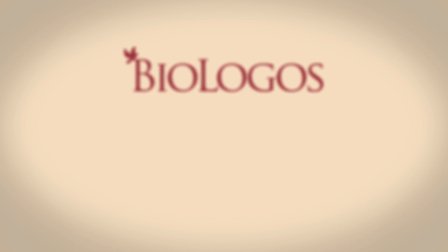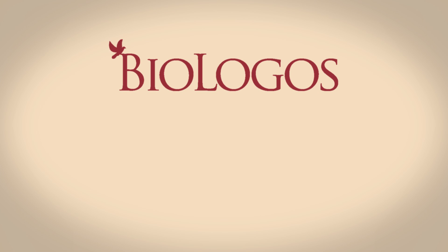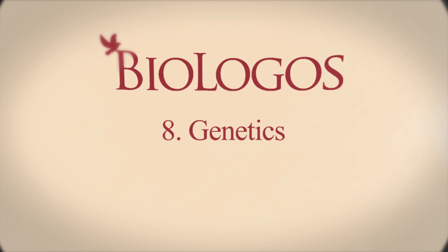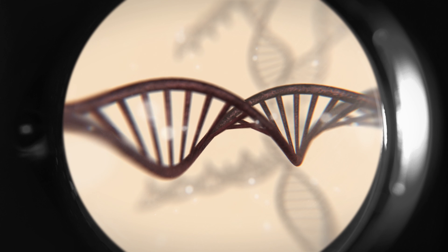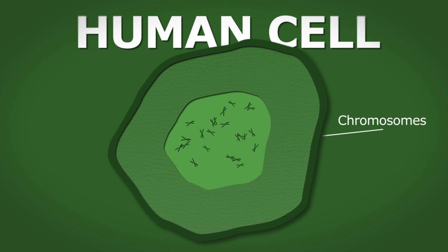Some of the strongest evidence for the common ancestry of all life forms comes from genetics. Genetics is the study of how changes are passed down from generation to generation through DNA. The basic units of heredity called genes are spread out along strands of DNA called chromosomes.